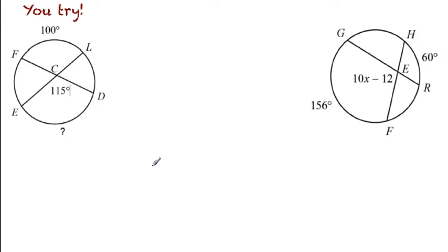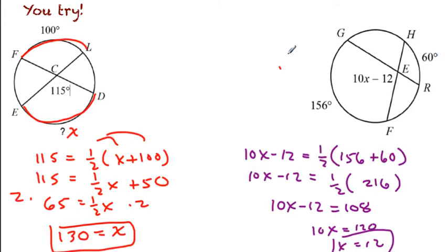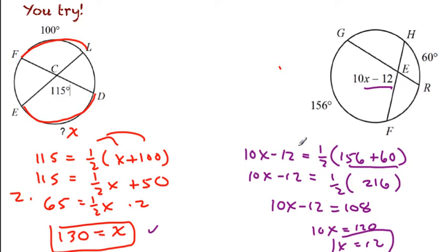Let's try two by yourself. Pause the video and we'll see how you do. For the first one, 115 equals one half of 100 plus X. Distribute: you get 50 here. Subtract 50 from each side. To get rid of the half X, multiply both sides by 2 — you get 130 for that one. Second one: 10X minus 2 equals half of 156 plus 60. That simplifies to 216; multiply by half to get 108. Add 12 to both sides: 120. Divide by 10, you get X equals 12. This is one of the easier theorems — two chords intersect inside the circle, it's half the sum of the intercepted arcs.